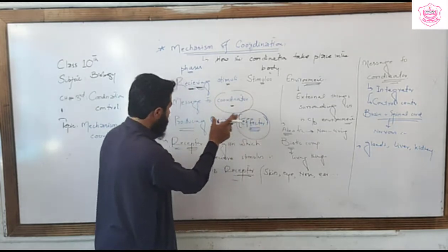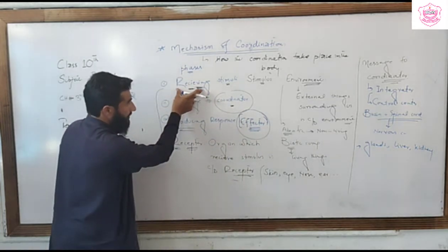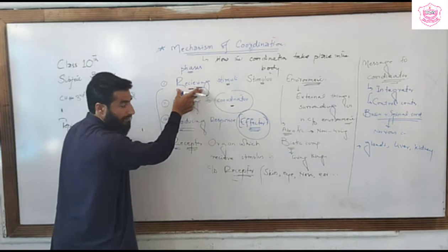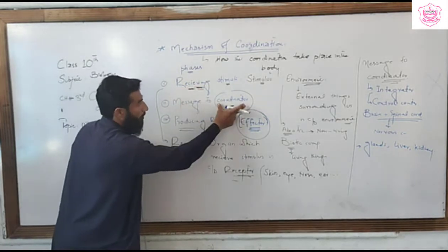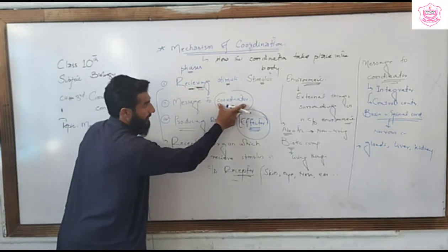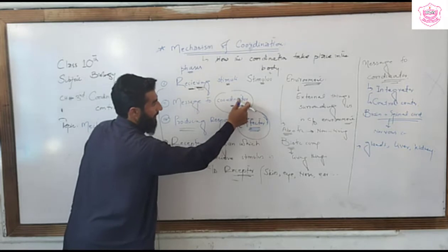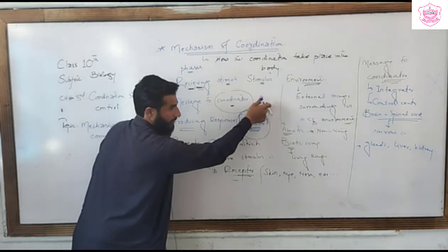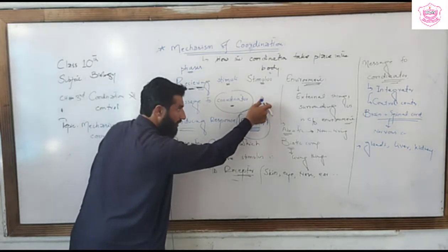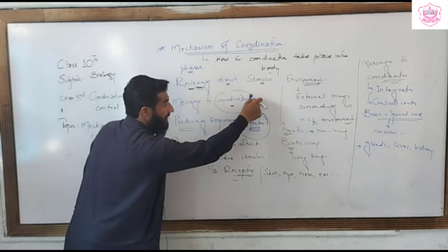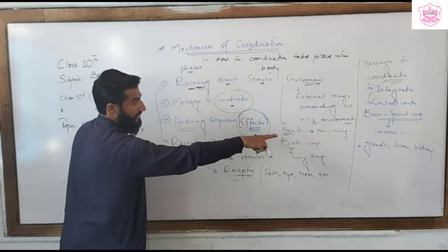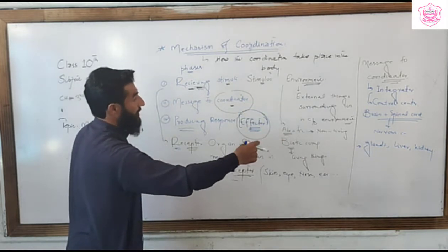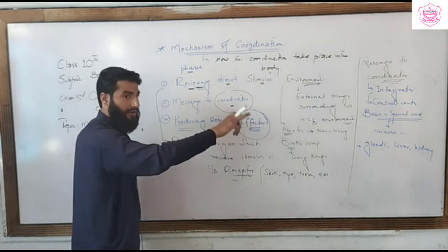So to summarize: the first step is to receive a message via receptors. If the control center is the brain plus spinal cord, then it is nervous coordination. While if the glands or different body parts like the kidney or liver are the control center, that means it is chemical coordination.